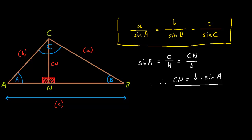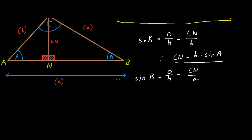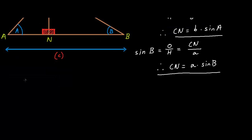Next, we need to find out what sine b is. Sine b equals opposite over hypotenuse, equals cn over a. Therefore, cn equals a multiplied by sine b.